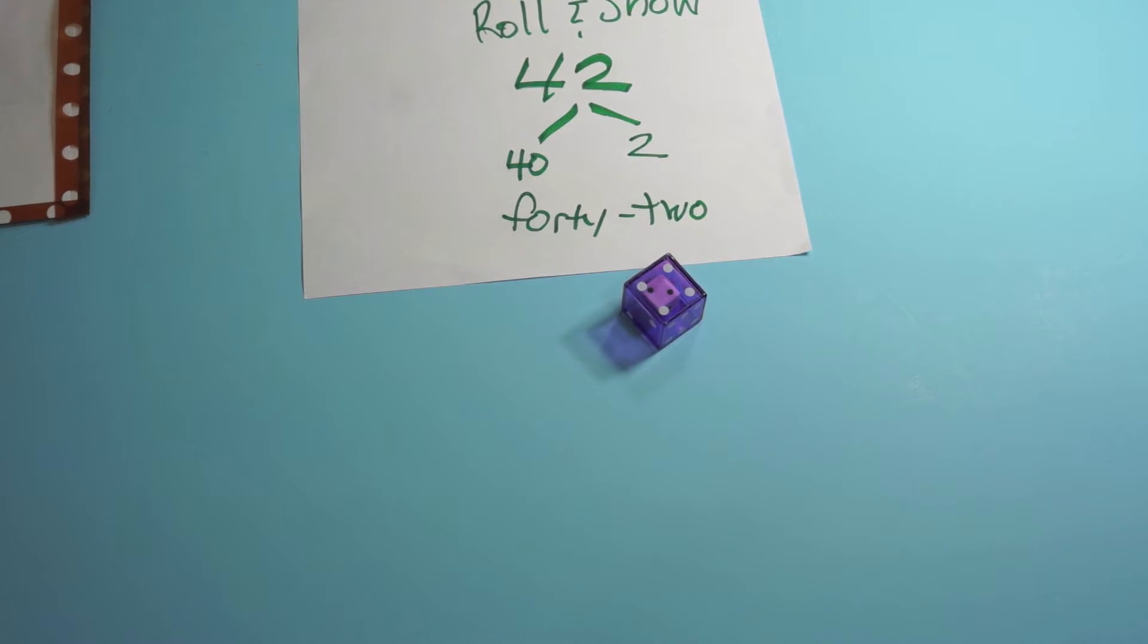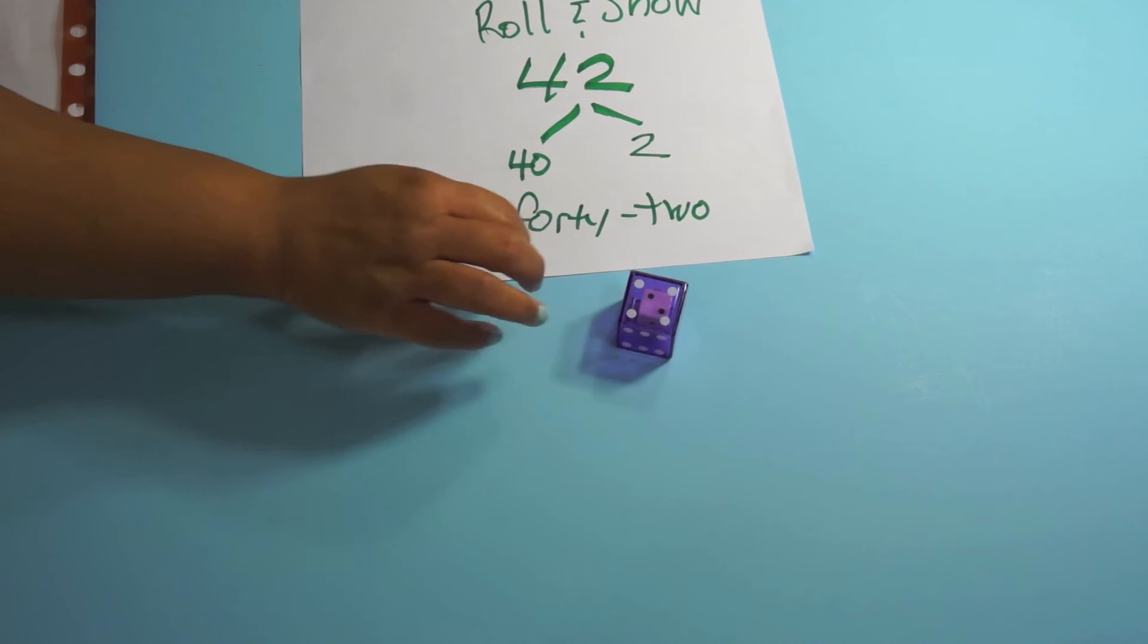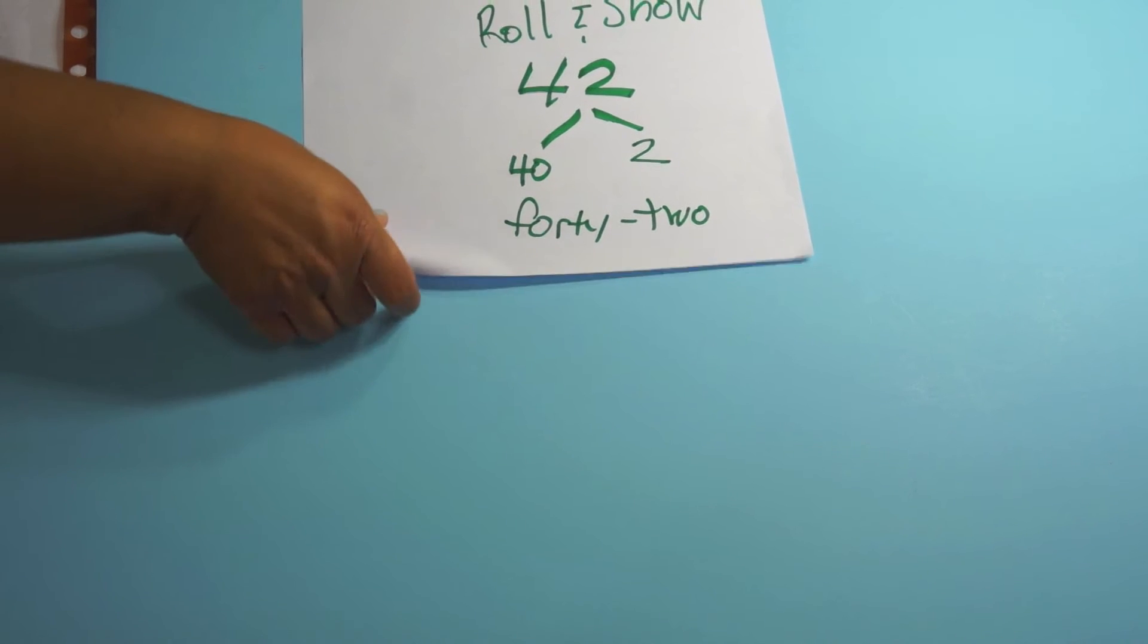Now the common core specifically says that children will develop, discuss, and use efficient, accurate, and generalizable methods to add within 100 and subtract multiples of 10. This is first grade we're talking about.